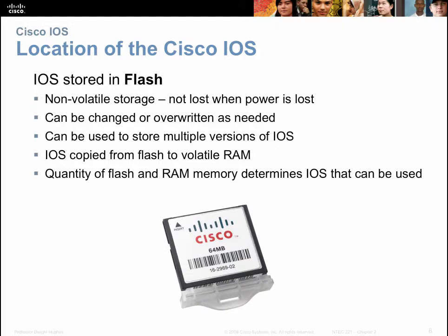Cisco stores their operating system on flash — similar to an SSD or a USB thumb drive. Flash is a non-volatile storage. Unlike a hard drive, which has many moving parts and is larger, flash is typically smaller in size, is not magnetic, so it doesn't suffer from magnetic field damage, and has no moving parts. Both hard drives and flash are non-volatile, meaning when you turn the power off, your information is still there, and you can overwrite the information as often as needed.